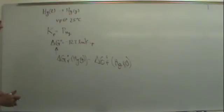That would equal delta G standard. You solve for K, and that is equal to the partial pressure.